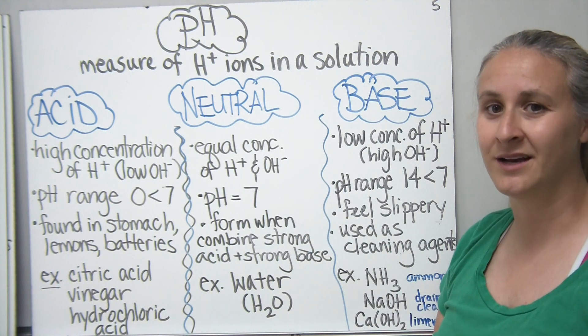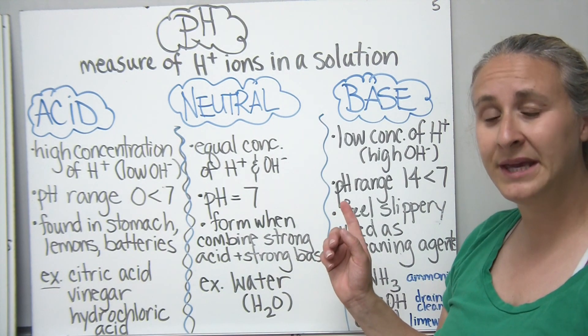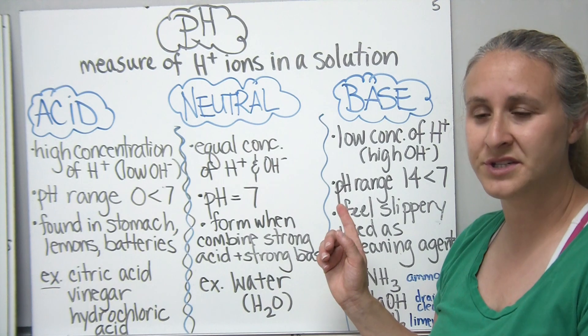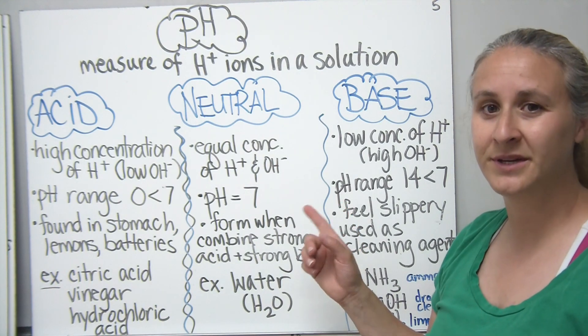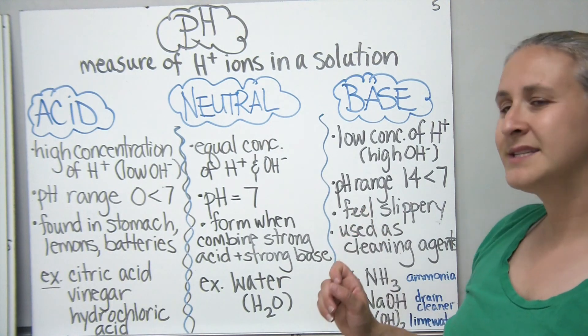So the pH range for a base happens to be less than 14 but above seven because remember seven was our neutral. Typically, when we think of our bases, they're very slippery to the touch.